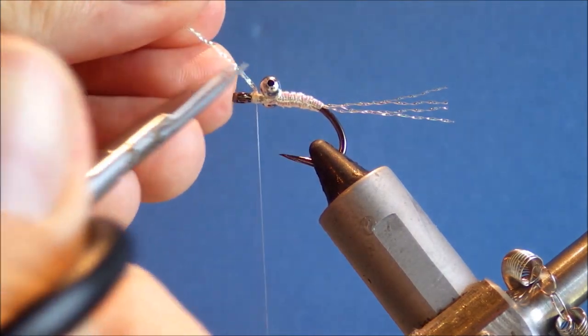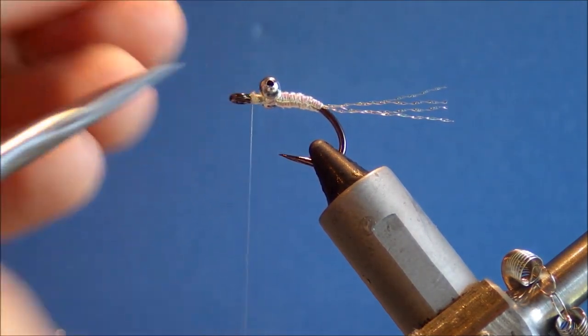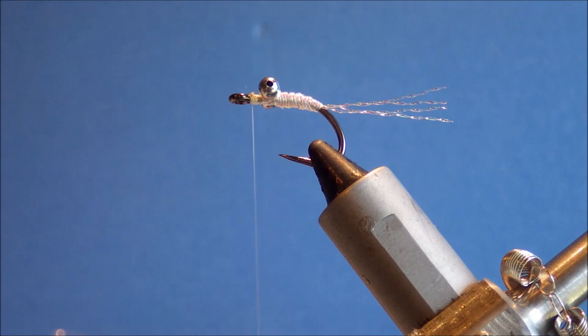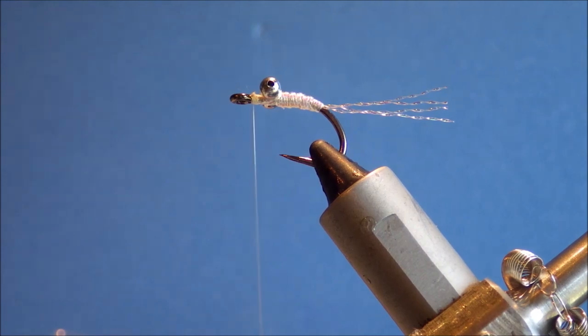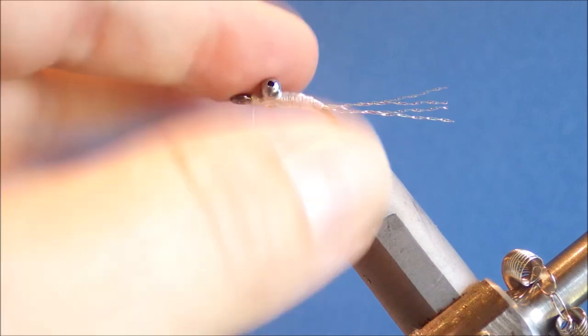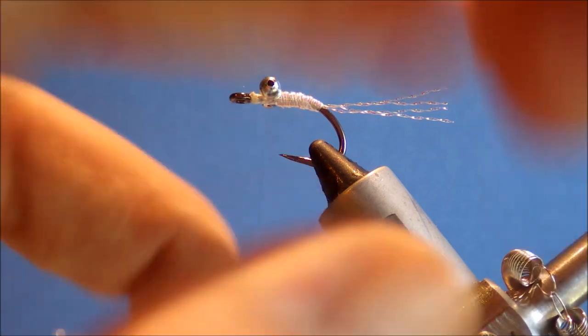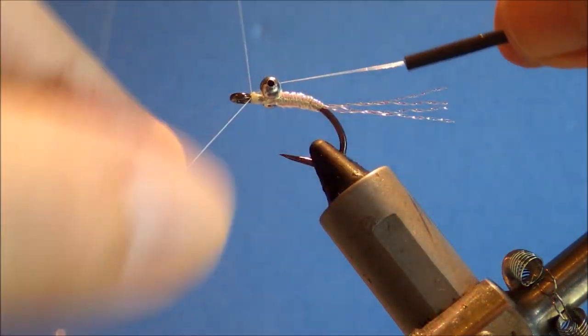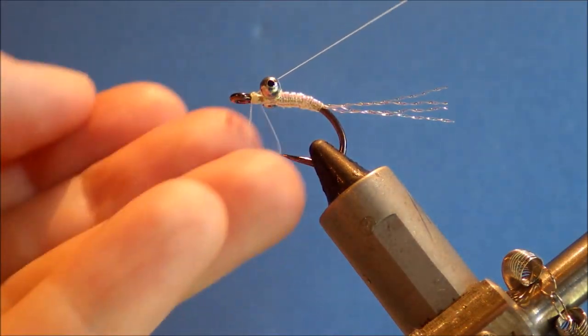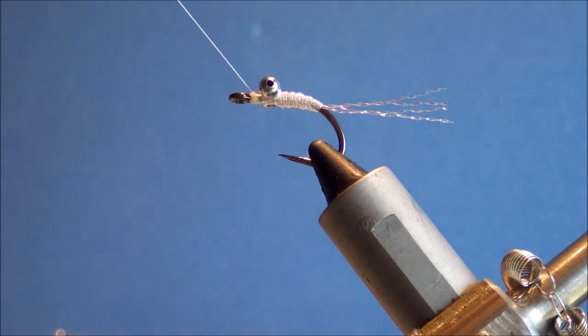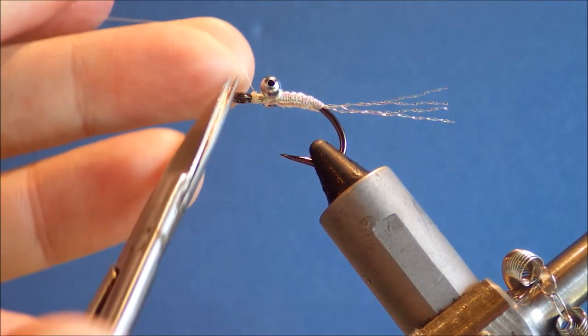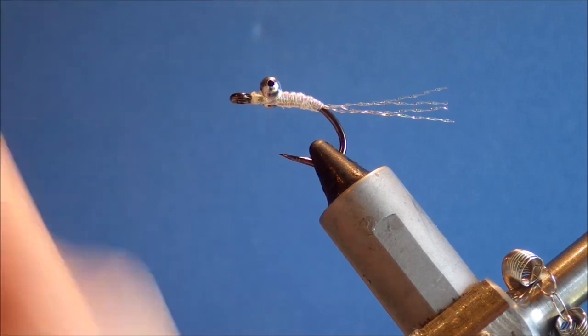I'm using very fine thread, 70 denier because this is quite a small hook. And I don't have a lot of room at the head and it lets you get plenty of wraps in. So, I've trimmed off my waste, I'm going to set them aside. They will do in the wing. And then I'm going to whip finish this and then finish off the body section.